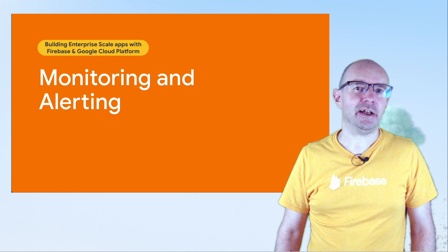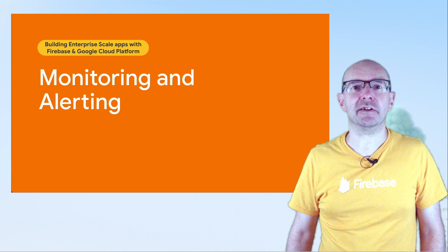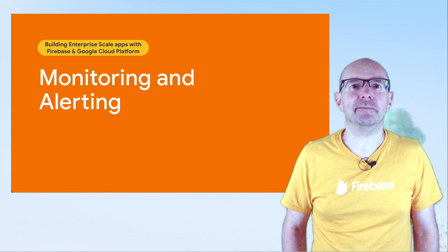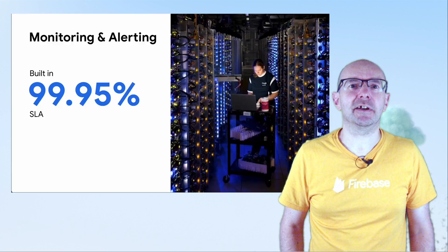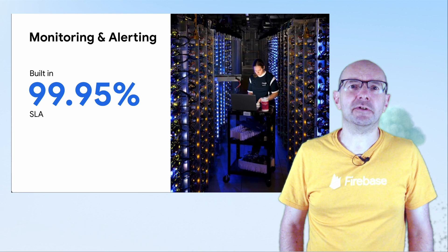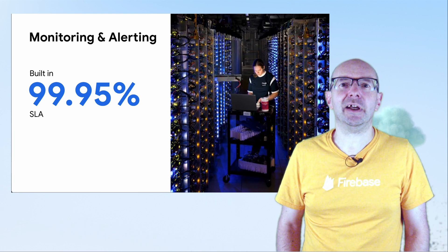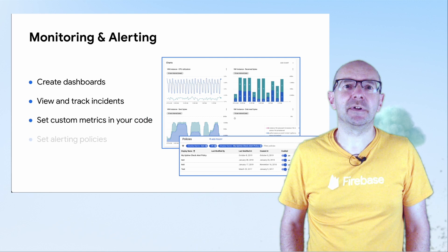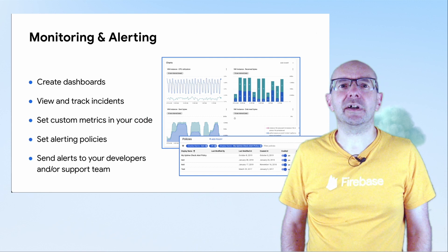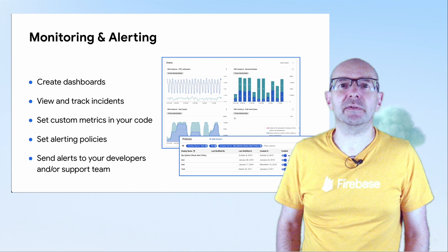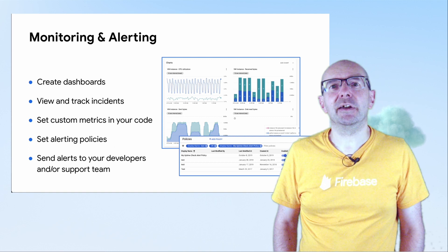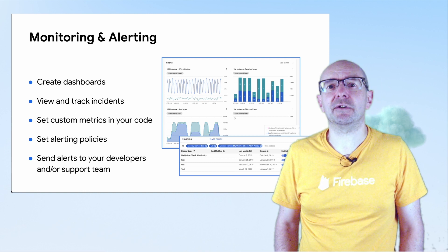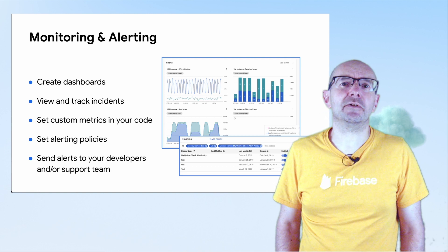Now our app is up and running, our data is secure, and our coffee shops have the analytics data they want — we need to keep our customers happy. There's nothing worse than an unreliable application. Using serverless tools from Firebase and Google Cloud Platform we can already rest knowing that Google's data center teams will work hard to ensure maximum uptime and performance, but sometimes unforeseen issues can happen. This is where monitoring is essential. Cloud Monitoring allows you to create dashboards showing the performance of your application including custom metrics, and will alert you of any incidents or problems. Connecting to an extended service like PagerDuty or Zendesk will keep your engineers on top of issues as they arise.